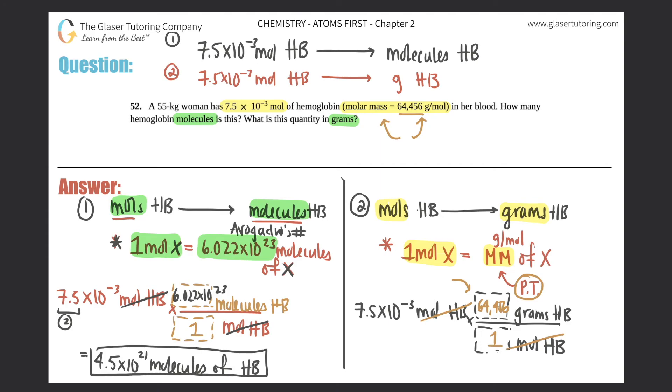So 7.5 times 10 to the negative 3 times 64,456. And we need two sig figs. So this will come out to be 4.8 times 10 to the second grams of hemoglobin. Box that answer off. That's the answer to the second part. So this was the answer to how many molecules there were of hemoglobin. This was the answer to how many grams of hemoglobin there were. And that checks off the whole problem 52.